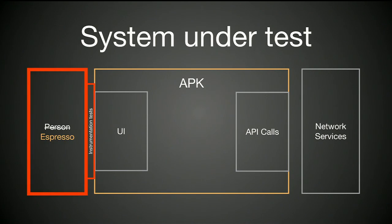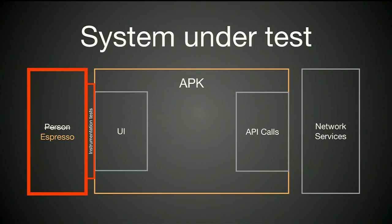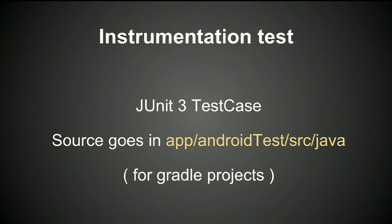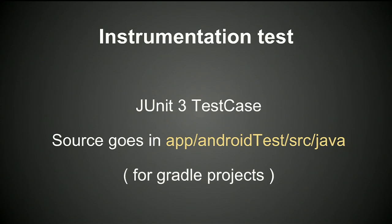So back to what we're talking about — we're testing the APK. In normal usage outside of automated testing, you have a person touching the screen, manipulating the UI. In our automation, Espresso takes the place of that person, going through the instrumentation test infrastructure that comes with the Android platform to get to the UI. An instrumentation test is a JUnit 3 test case that comes with the Android platform. If you're doing a Gradle project, you put your JUnit 3 test case in the Android test source folder, and the Gradle plug-in knows how to do the right thing.